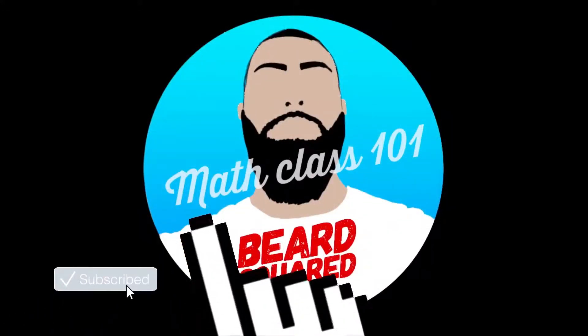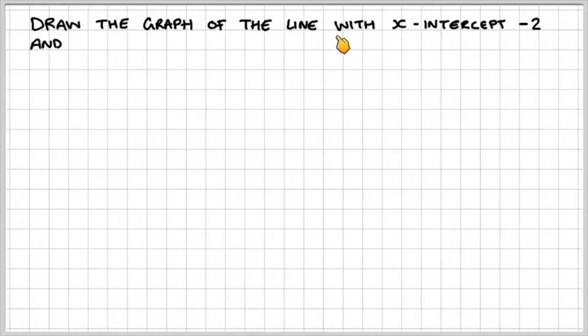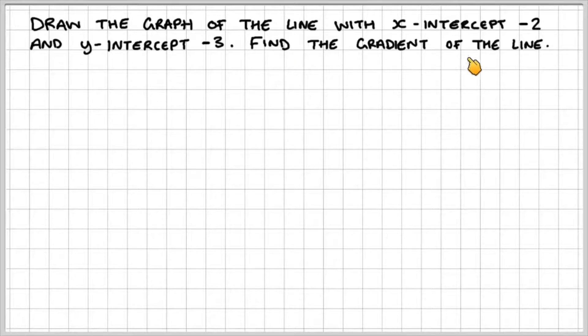Let's jump onto the last example. Draw the graph of the line with x-intercept -2 and y-intercept -3, and find the gradient of the line.